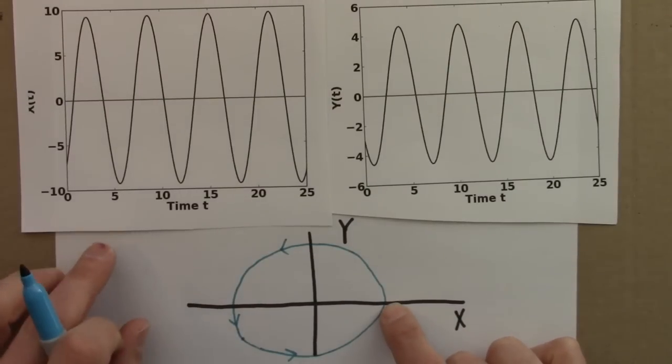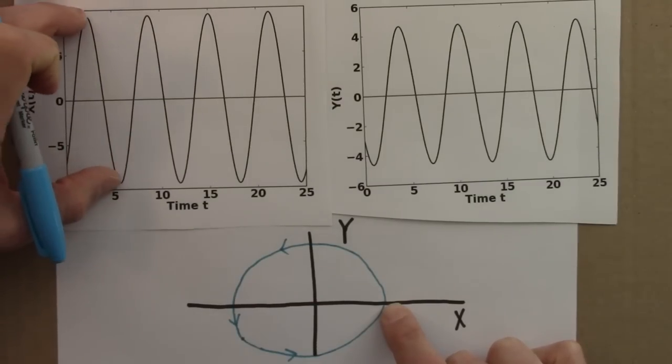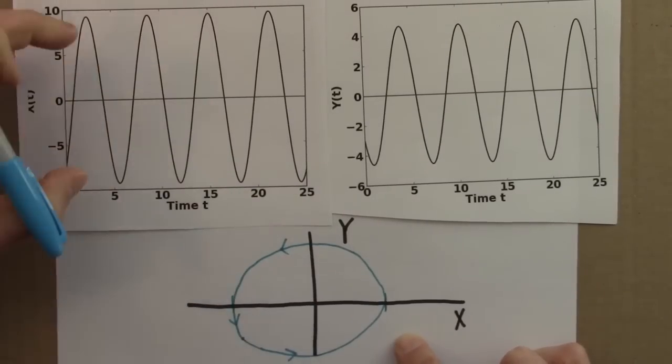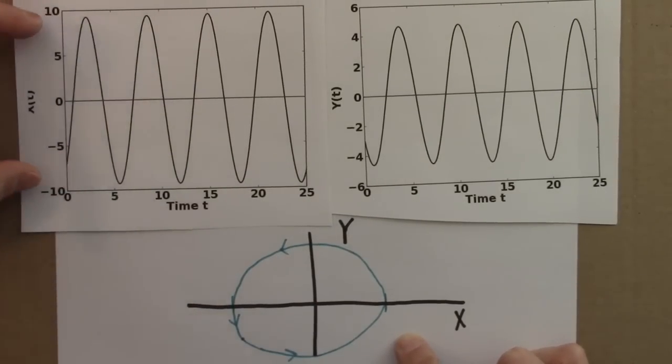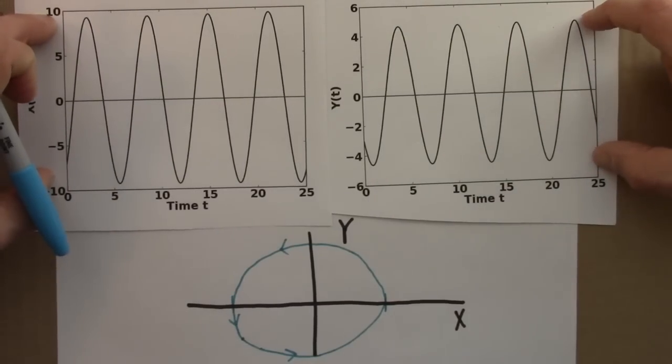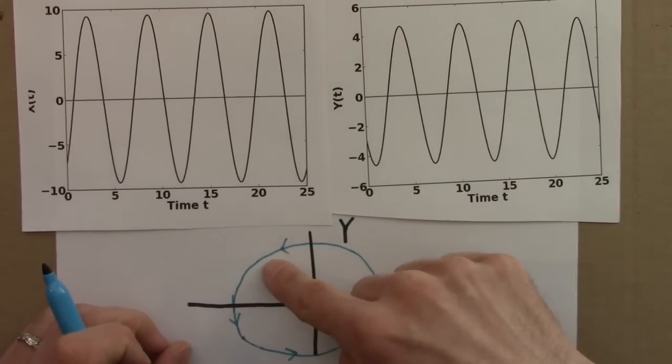So x is going from roughly minus 10 to 10, maybe that's 9.5. These are the sort of min and max values for x. y is going roughly between 4.5 and minus 4.5.